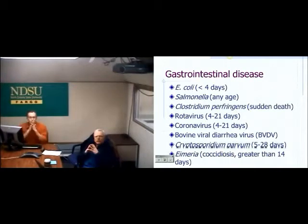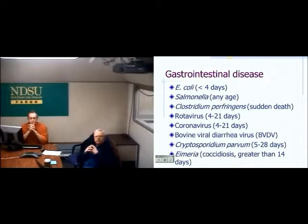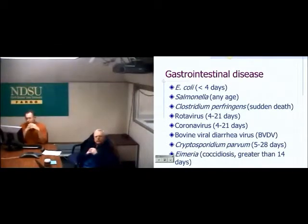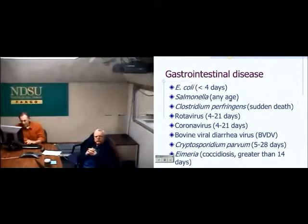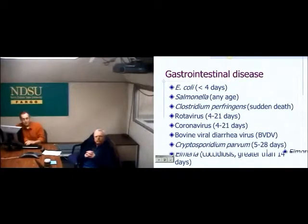Moving to gastrointestinal disease — I want to show a chart of when you could reasonably expect some of these things to occur, because not all infectious agents can show up at the same time. For example, coccidiosis needs a couple of weeks to show up in calves, as opposed to E. coli, which can show up in just a couple of days.